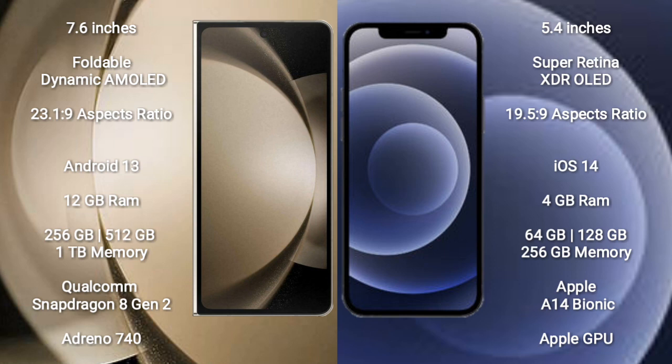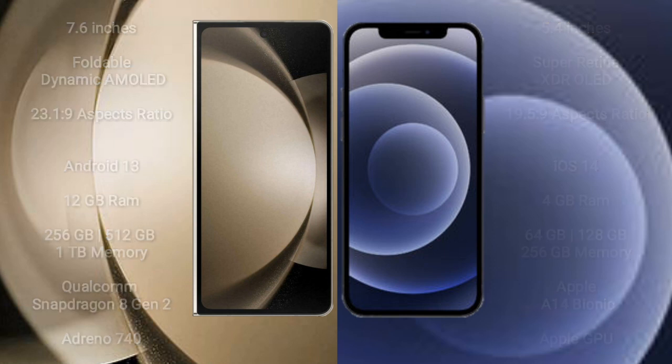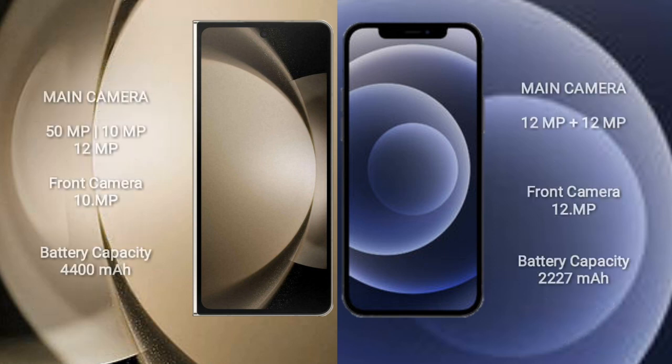Samsung Galaxy Z Fold 5 features a rear triple-camera setup: 50MP plus 10MP plus 12MP, with an additional 12MP front camera. iPhone 12 mini features a rear dual-camera setup: 12MP plus 12MP, with a 12MP front camera.